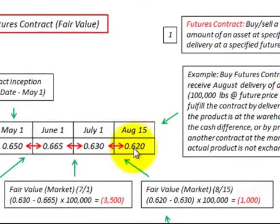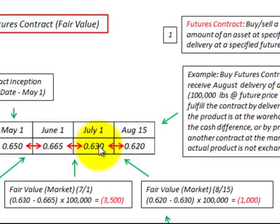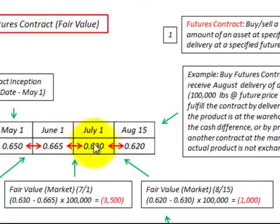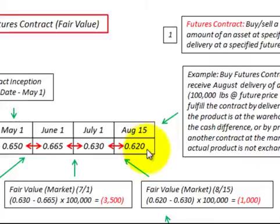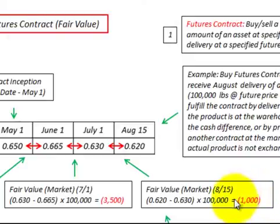Looking at our last period, August 15th, we again compare the future rate on August 15th with the previous period of July 1st. There was again a reduction in the future rate, so we'd be receiving less money and recognizing a loss. The difference between the August 15th rate of .620 and the July 1st rate of .630, times the quantity, gives us a loss of $1,000 on this futures contract.